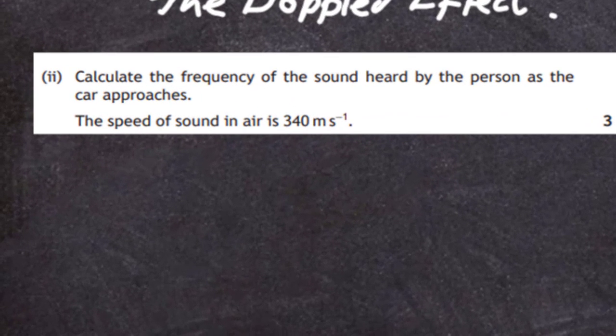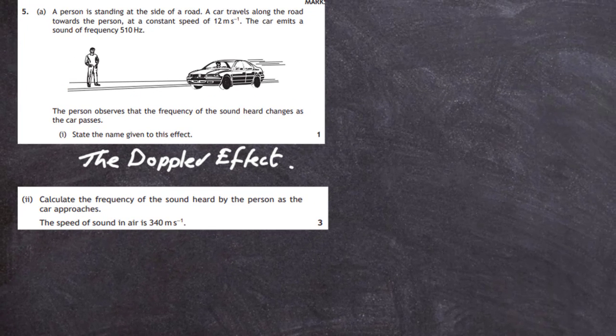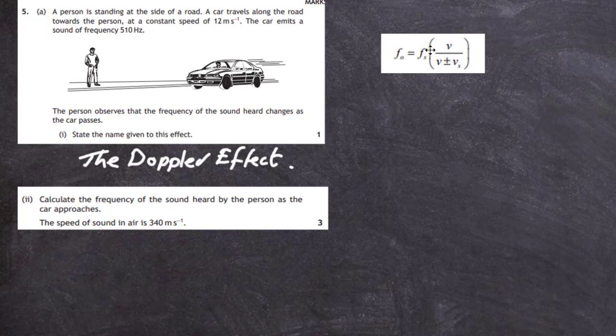Question 5A part 2. Calculate the frequency of the sound heard by the person as the car approaches. The speed of sound in air is 340 meters per second. We go to our data book and find our Doppler effect formula. F0 equals Fs into the bracket V divided by V plus or minus Vs. We should know what all these symbols mean.